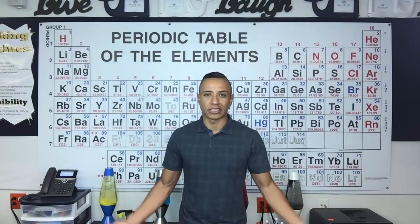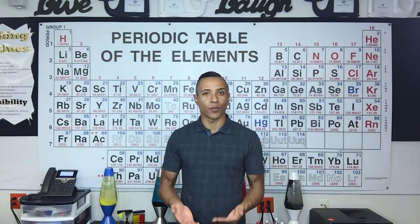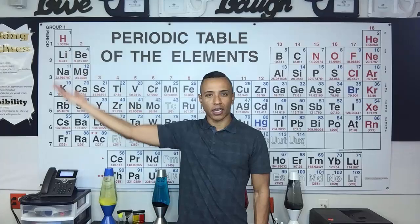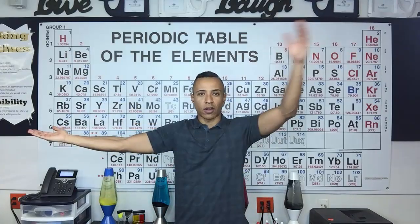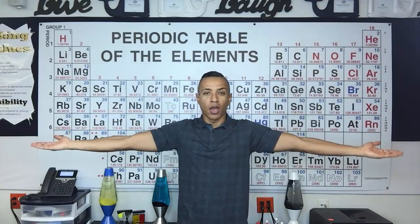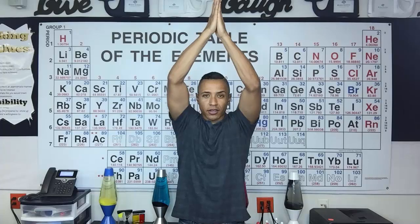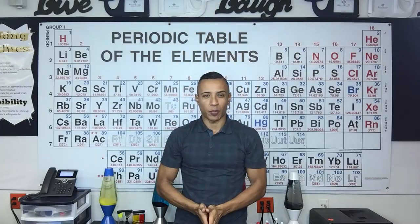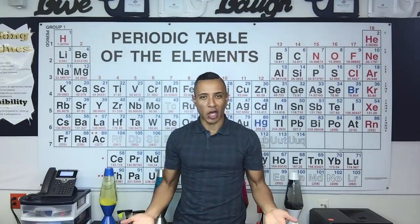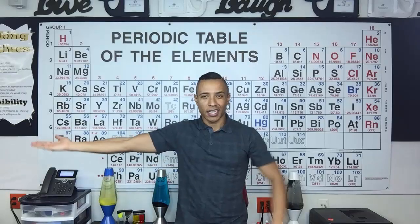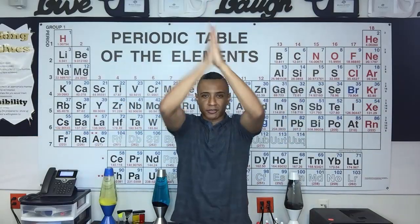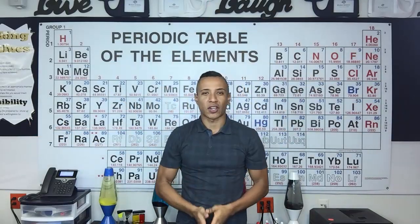What I do is have the students stand up with me and then we point. Metals are on one side of the periodic table, non-metals on the opposite side. When they come together, they form the letter I for ionic compounds. Again — metals, non-metals come together, form the letter I.